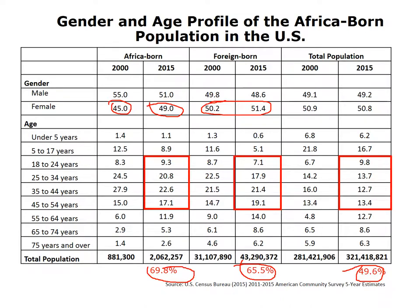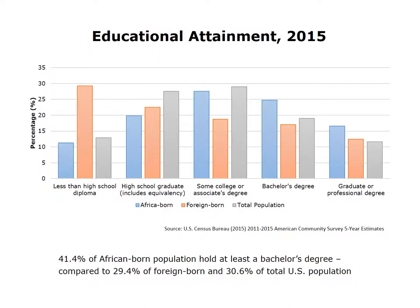Contrary to popular perception, the African-born population in the United States exhibits higher levels of education than the foreign-born population as well as the general US population. Forty-one percent of the African-born population hold at least a bachelor's degree, compared to 29 percent of the foreign-born population and 31 percent of the general US population. The same pattern holds for graduate or professional degrees — African-born persons tend to be more educated than either the foreign-born population or the general US population.